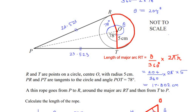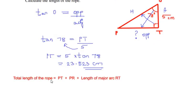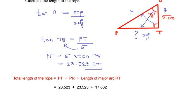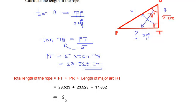So the length of the major arc RT is approximately 17.802 centimeters. To find the total length of the rope, we add PT + PR + major arc RT: 23.523 + 23.523 + 17.802 = 64.848 centimeters. Rounding to one decimal place, the total length of the rope is 64.8 centimeters.